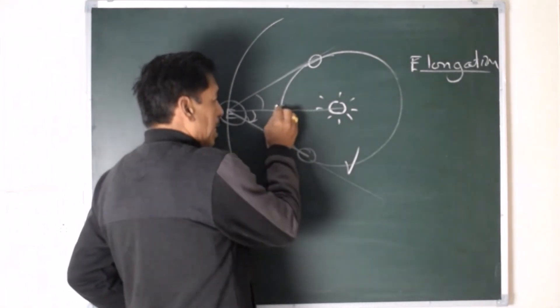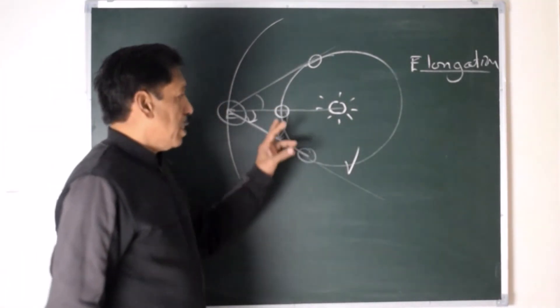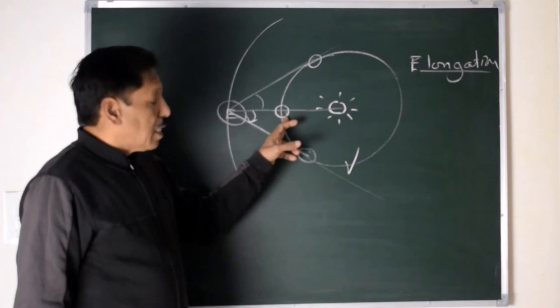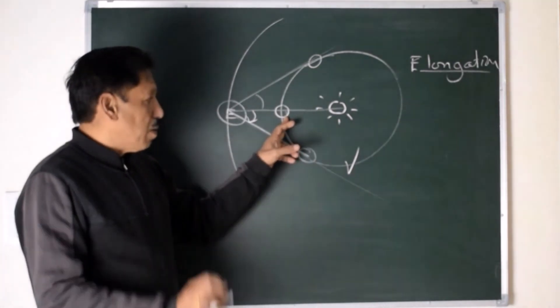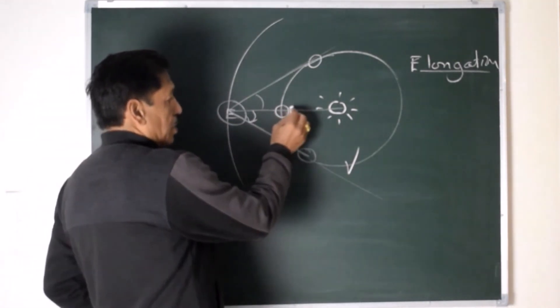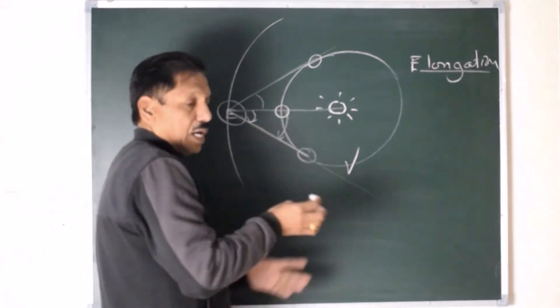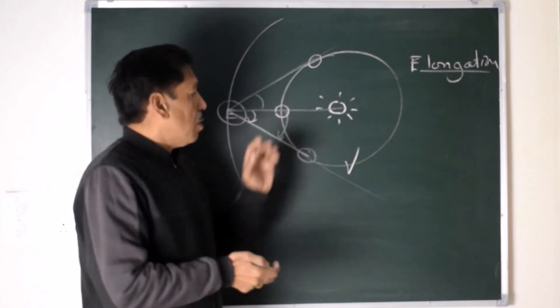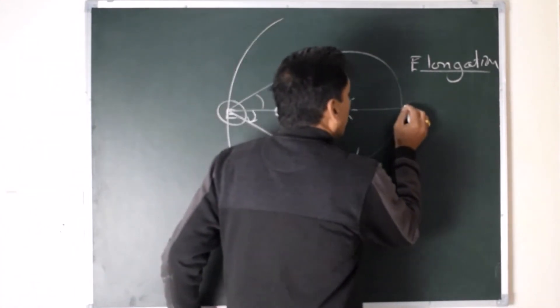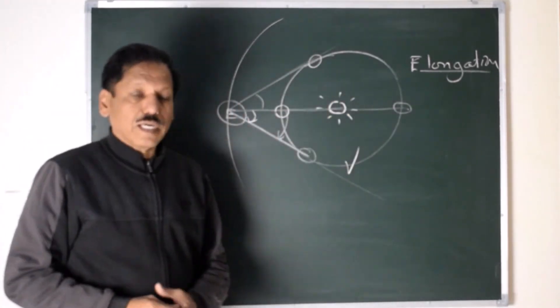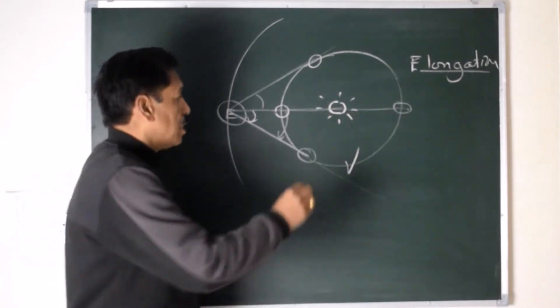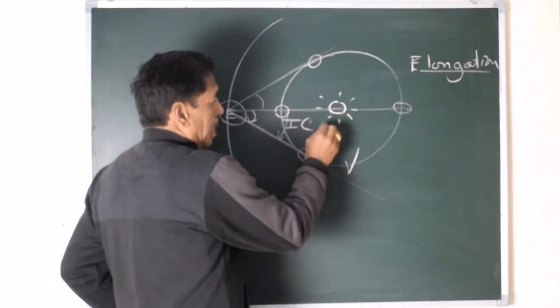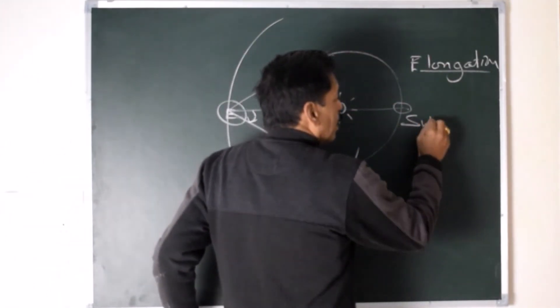Venus can only be in conjunction. Venus can have inferior conjunction over here, conjunction over here. Conjunction means zero elongation, as you see the direction of Sun and the direction of Venus are the same. The angle between their directions is zero. So Venus on zero elongation here, Venus on zero elongation there, both are conjunction. This is inferior conjunction and this is superior conjunction.